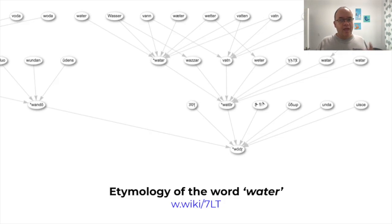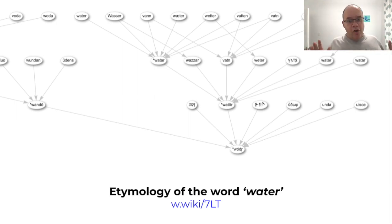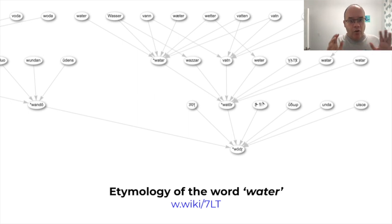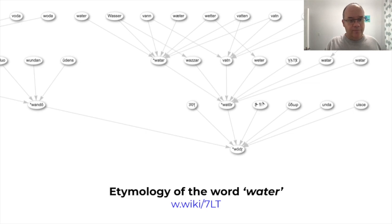Next query. This here is a fully interactive graph of the etymology of the English word 'water' and its cognates, going back to Old English and eventually Proto-Indo-European, and all the other languages that derive a word from the same root.